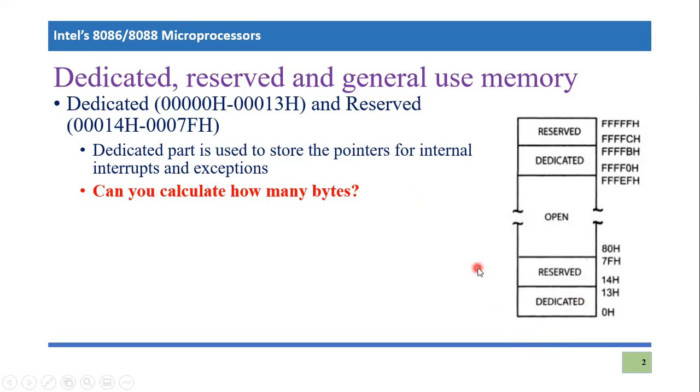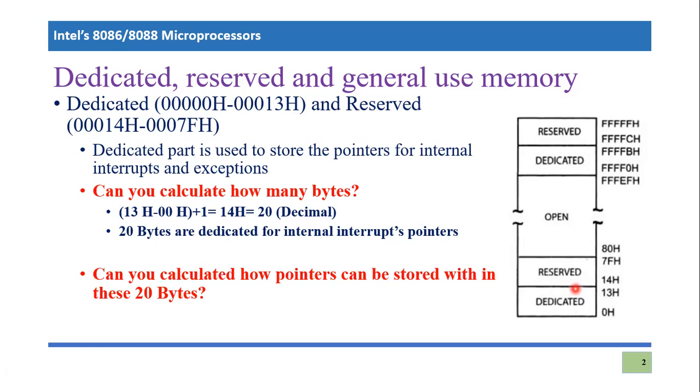If I want to calculate the how many bytes in dedicated portion, it's quite simple. Same procedure: 13H minus 00H plus 1 due to zero, then it becomes 14H. And you know that 14H means 20 decimal. And you know that 20 bytes are dedicated for interrupt pointers because this is dedicated portion. If I'm going to ask you how many pointer, it's quite easy. Because you know that pointer means how many bytes, four byte or four location. So we are considering 20 bytes, so it will be five pointers. So there are five different internal interrupts pointers are stored in this dedicated portion. I hope you have understand the concept of dedicated memory over here.